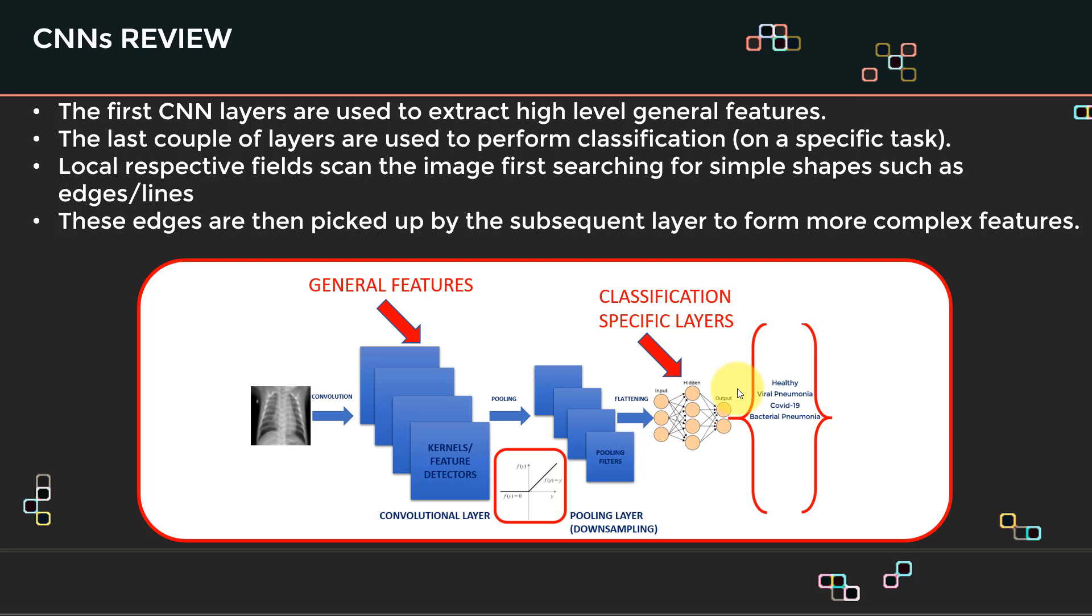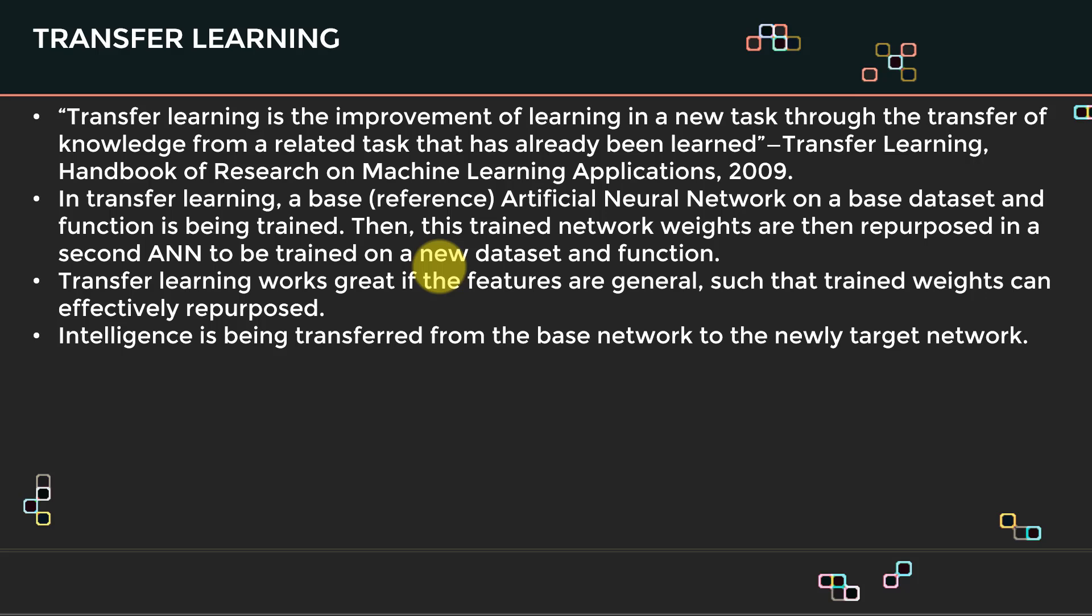So a very important point to illustrate here is that early layers, like all these convolutions here, they try to capture what we call general features. Once you go deeper in the network, specifically here, when it goes to the classification head, we actually try to perform what we call classification specific layers. And essentially, early layers here capture general features. And as you go deeper, more complex features are being captured. So the question is, why are you mentioning that right now? I'm mentioning that because that's the concept of transfer learning.